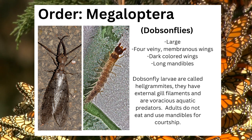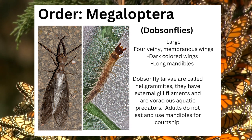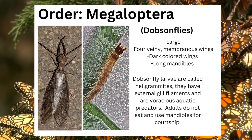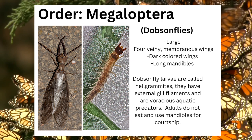Megaloptera, also known as dobsonflies, can be identified due to their large size, their four veiny membranous wings, the dark color of these wings, and their long mandibles. Dobsonfly larvae are called hellgrammites; they have external gill filaments and are voracious aquatic predators. Adults do not eat and use their mandibles for courtship.